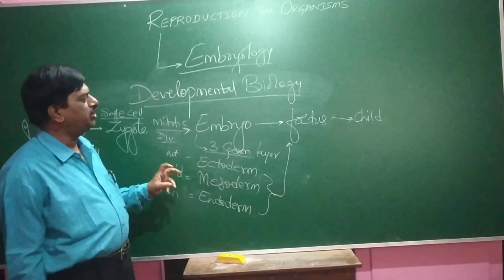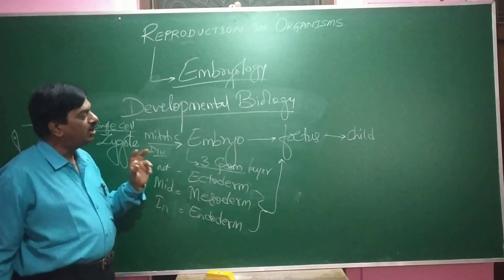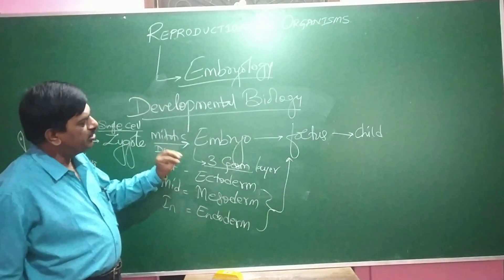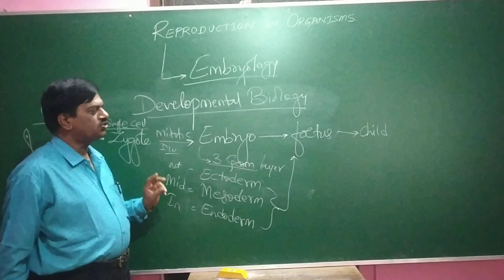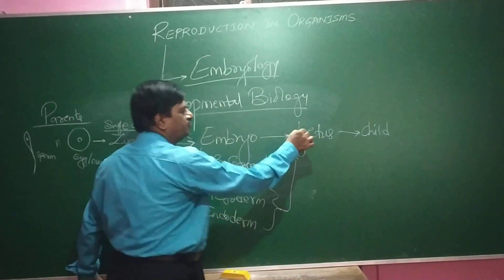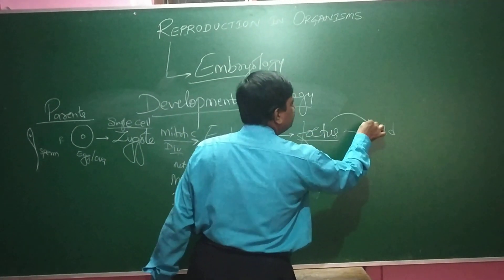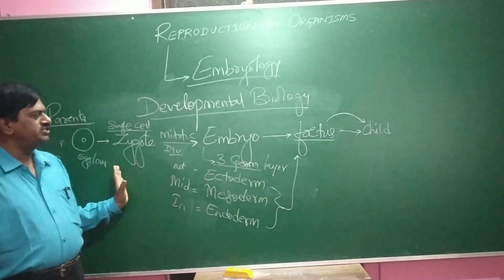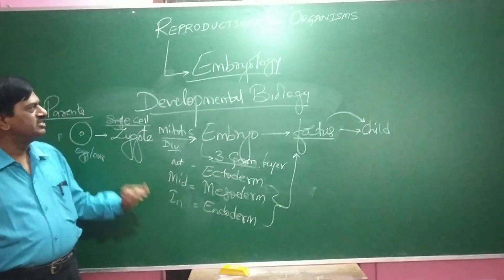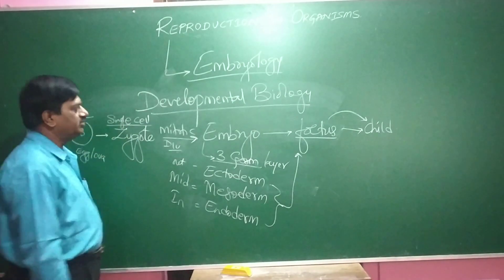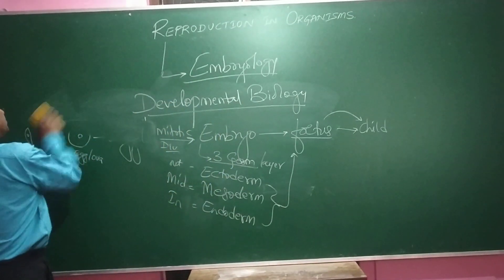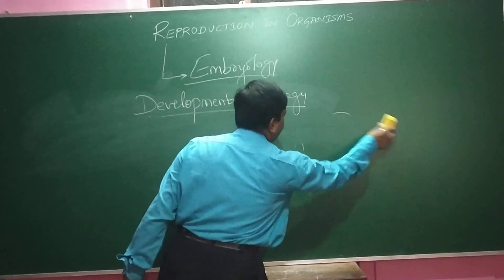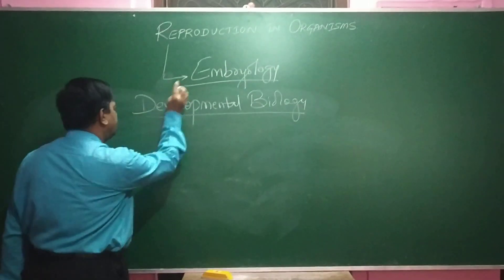The three germ layers give rise to a fetus — a small individual or young one produced inside the female uterus, called the fetus. After the full development of the fetus, it becomes a young one called a child. These changes are called developmental biology, or embryology, which is also called continuity of life.